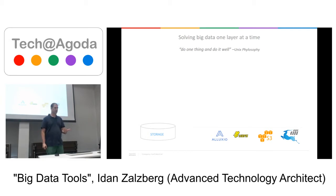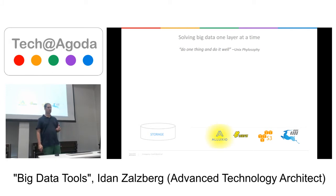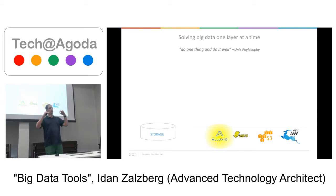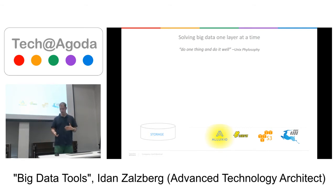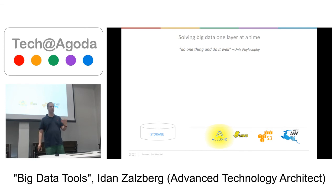HDFS was later continued by other technologies. S3 is also a kind of that storage. One interesting newer technology in this area is Alluxio, which creates this kind of storage but in memory. Memory is becoming less expensive, so it's becoming cost-effective to use it even as a storage layer. So let's say we got storage working — we have the files sitting there, we can access them, and it's resilient.